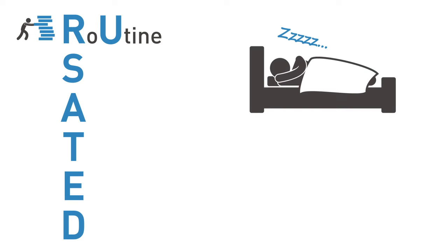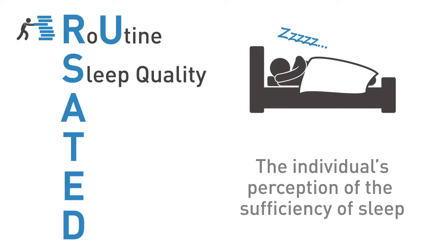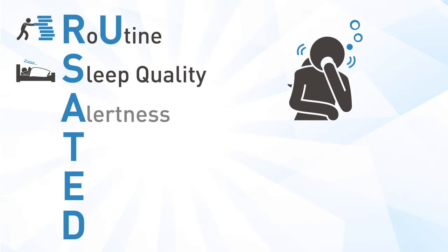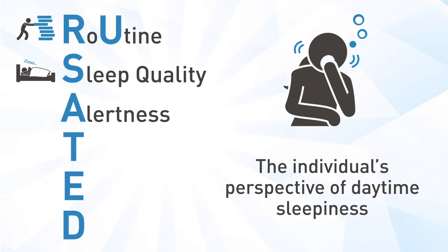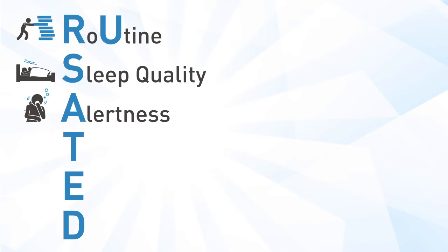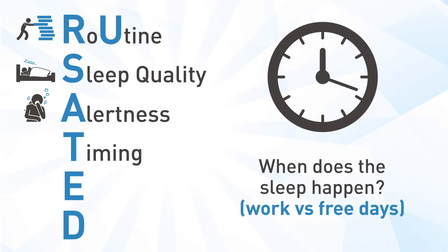S stands for sleep quality — this is a simple query of whether an individual perceives their sleep to be of sufficient quality. A stands for alertness — this is a report of daytime alertness level from an individual's perspective. T stands for timing — asking about when the sleep period usually happens, particularly comparing work and free days, complements the assessment of routine.